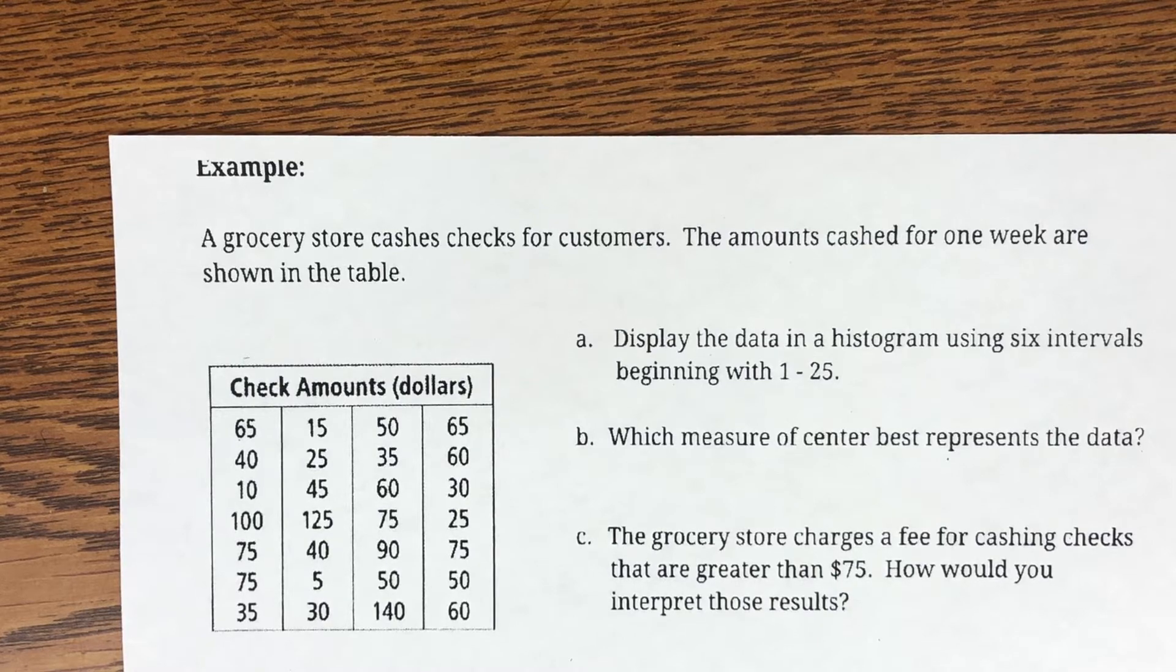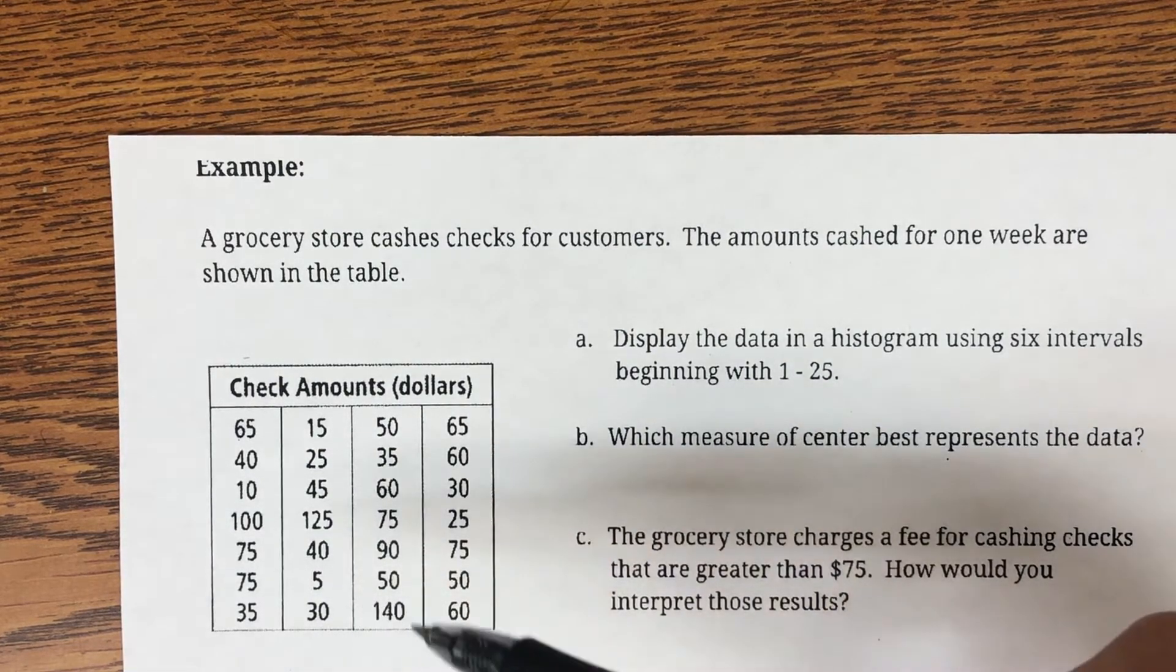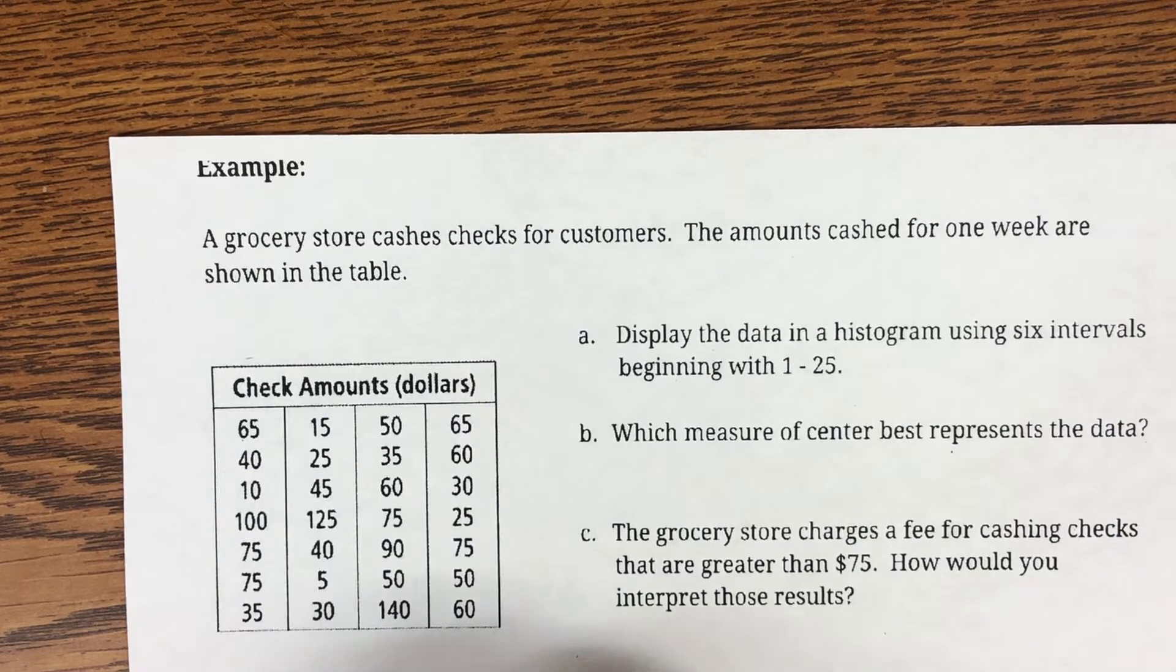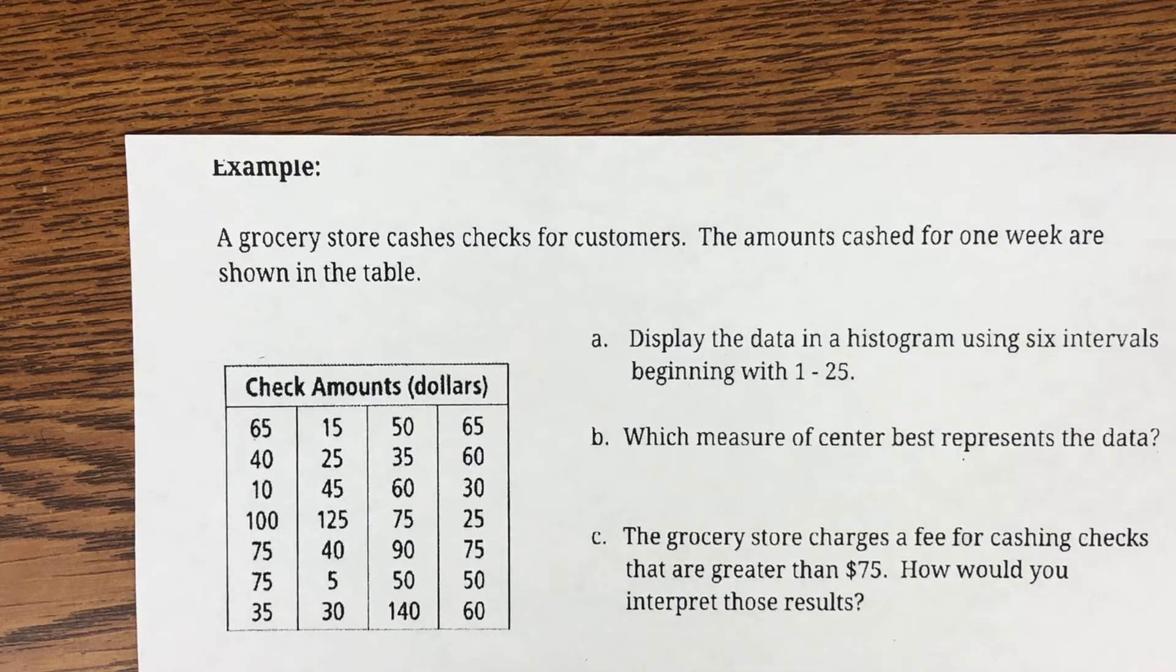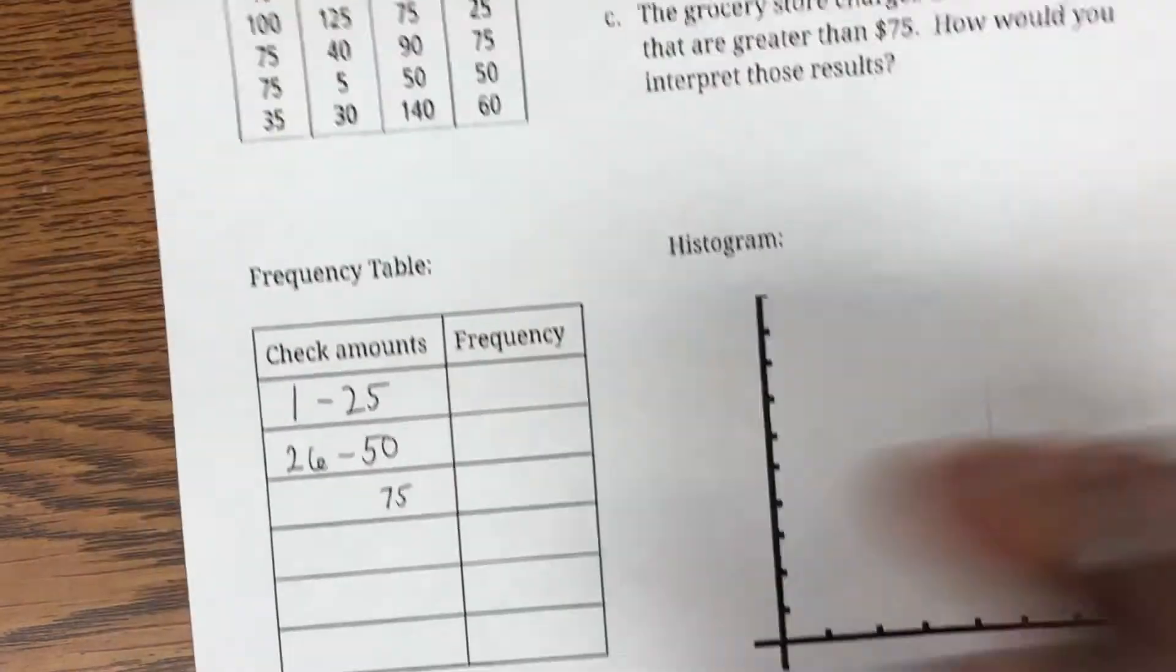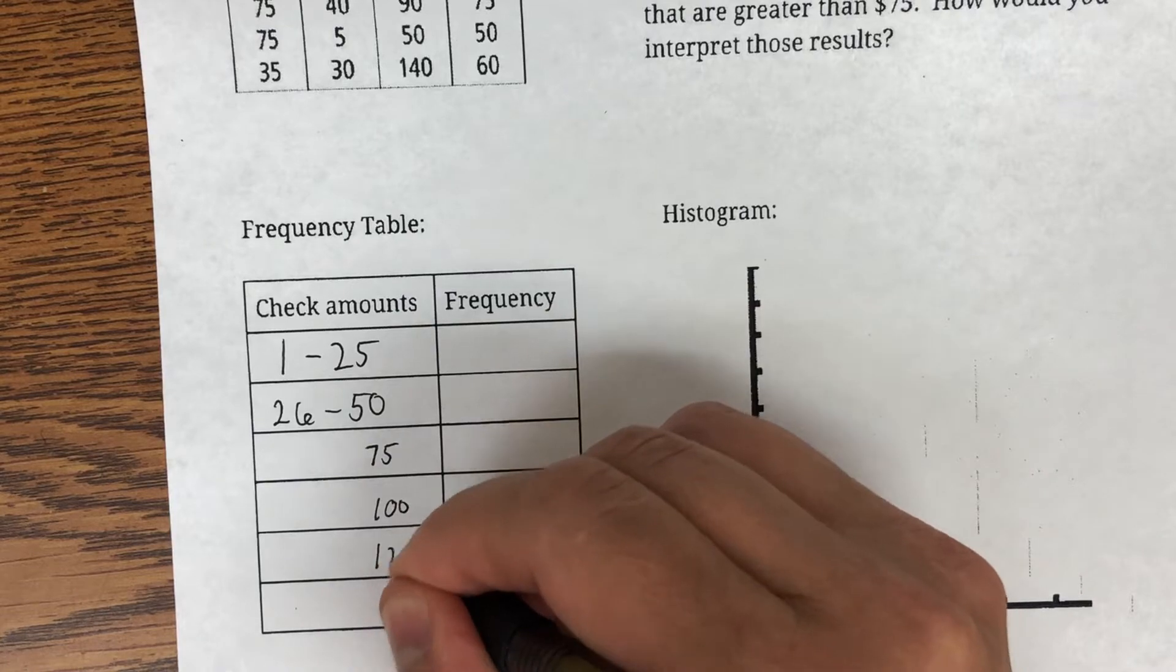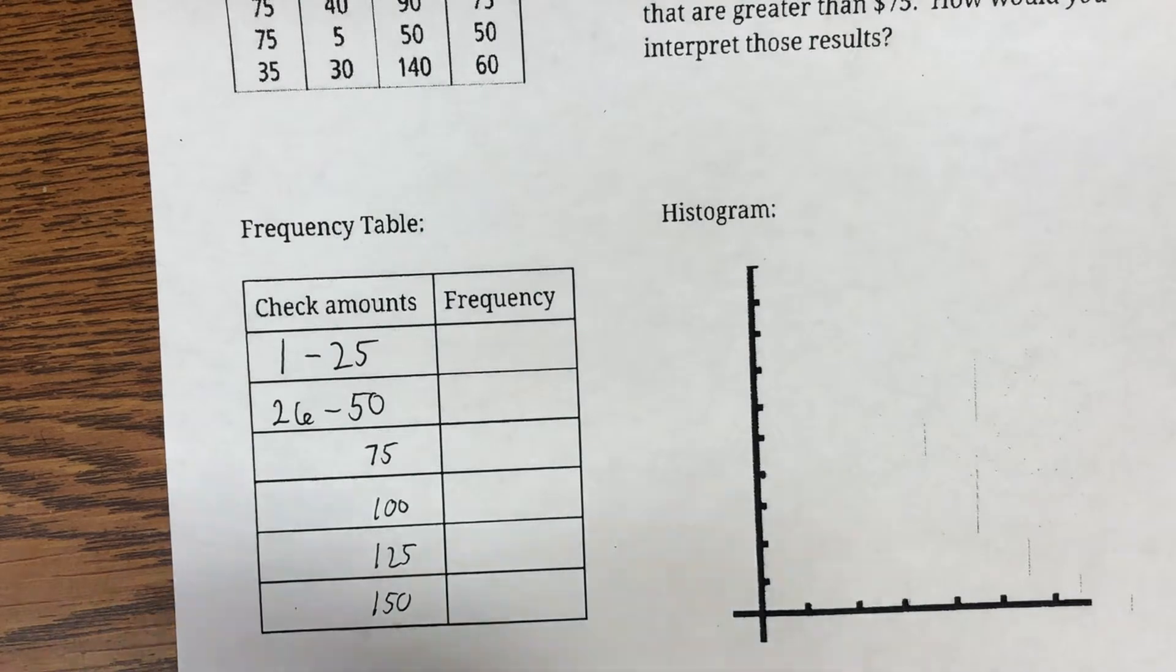Now, I decided to go up, since I have to get all the way up to $140, I had a low value of $5, that means I really need to be between $0 and $150. So, I'm going to go up by $25. So, I'm going to go from $1 to $25, and the next one would be $26 to $50. And then, if I'm going up by $25, I'd have $75, and then $100, and $125, and $150. So, each time I'm going up by $25.